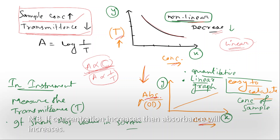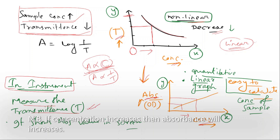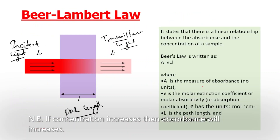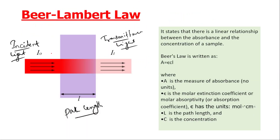The absorbance, on the other hand, has the same relationship as concentration in a linear manner. When the concentration approaches zero, the absorbance also approaches zero. This linear relationship makes it easy to calculate the concentration of a sample.